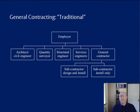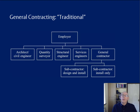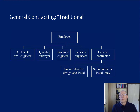First up is general contracting. Now this is often known in the industry as traditional contracting or traditional general contracting. But I try to avoid calling it traditional — and I put the word in inverted commas on the slide — because it's not that traditional. It's a tradition that only goes back to 1830. Prior to the industrial revolution, this was not the way that we procured construction, for there was no such thing as a general contractor.